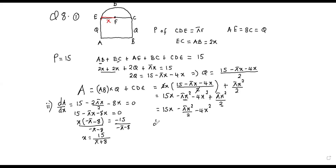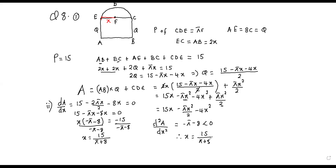If we want to confirm that this x gives us a maximum, we can differentiate the area again to get the second derivative. That will be −π − 8, which is clearly less than zero. So when the second derivative is negative at that value of x, it shows that x = 15/(π + 8) gives us maximum.